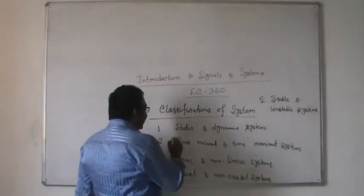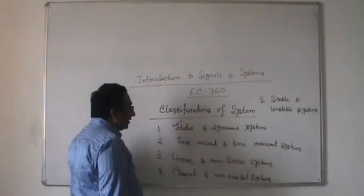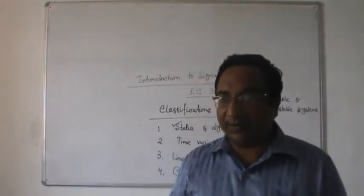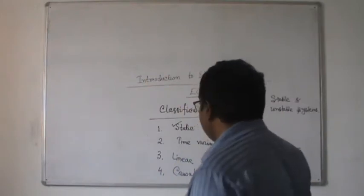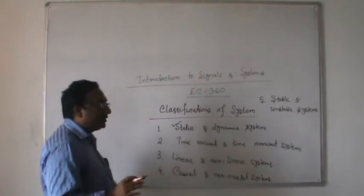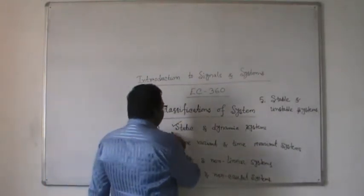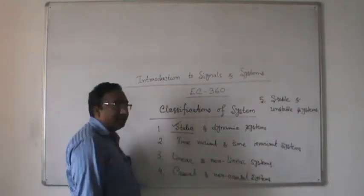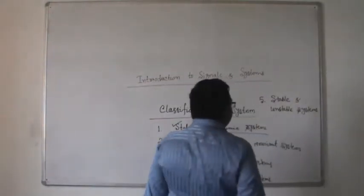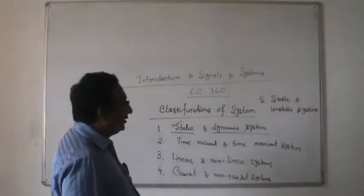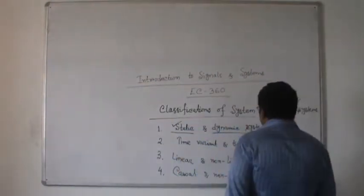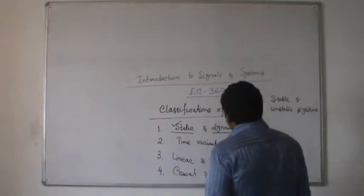Whenever we talk about a static system, we can say this is a system in which the parameter variable, whichever it is, will be constant throughout. That means with respect to time, the parameter variable will not be changing. So it is a static system. For a dynamic system, whatever the parameter variable is, it will be changing with respect to time. This is the characteristic of a dynamic system.